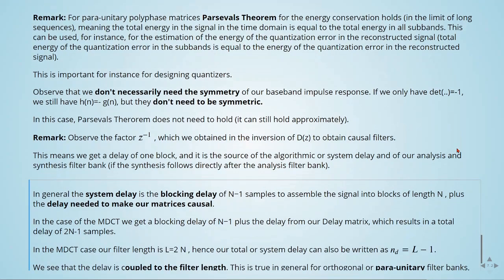Observe the factor of z to the power of minus 1, which we obtain in the inversion of the delay matrix D of z to obtain causal filters. This means we get a delay of one block, and it is the source of the algorithm, or the system delay, of our analysis and synthesis filter bank, if the synthesis follows directly after the analysis filter bank.